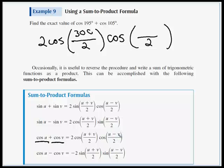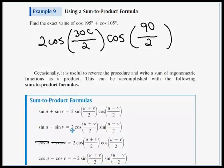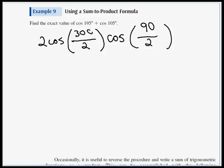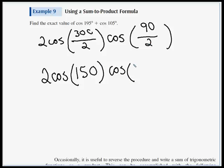And in the second set of parentheses, it's the difference, u minus v. 195 minus 105 is 90. So I can put these formulas away. And let's see what we have. 2 times the cos of half of 300 is 150. That's on the unit circle. Times the cosine of 90 divided by 2 is 45. That is also on the unit circle.